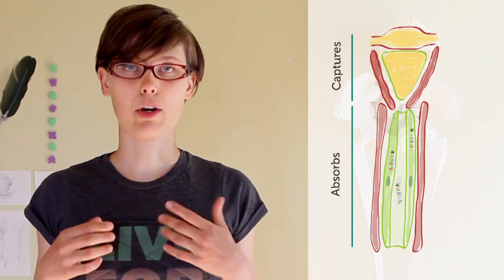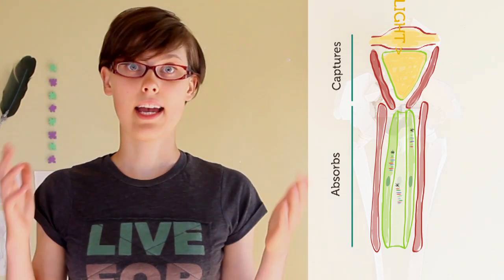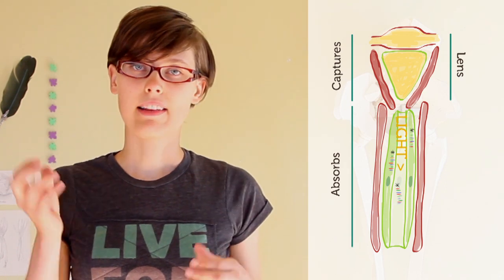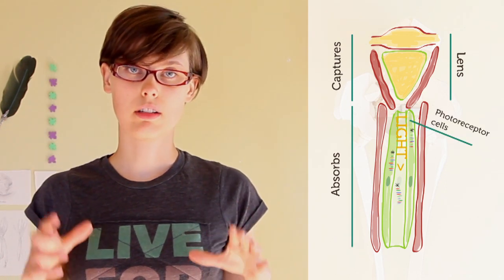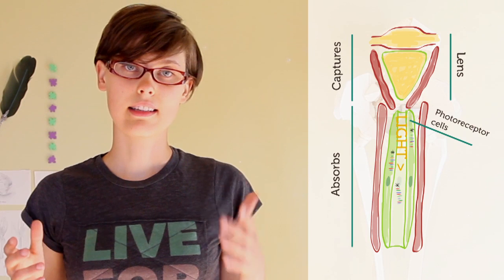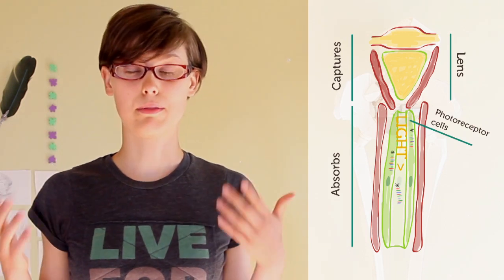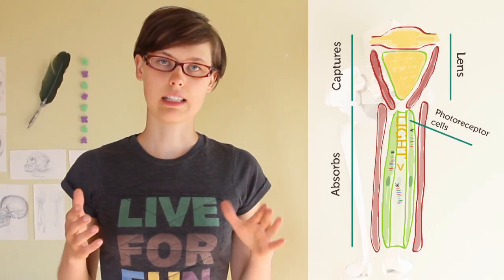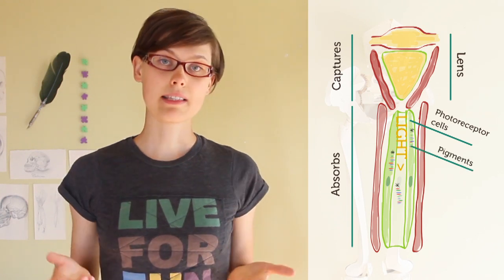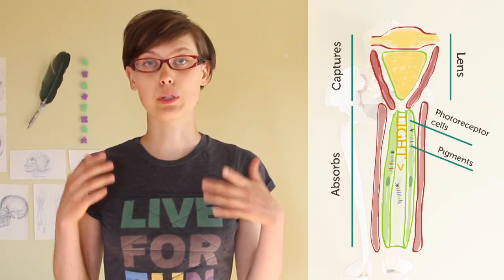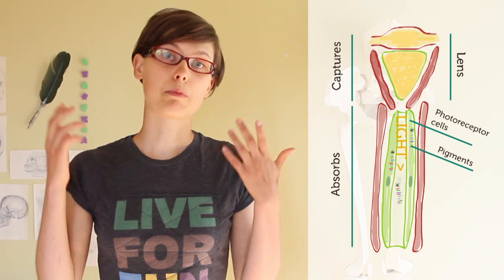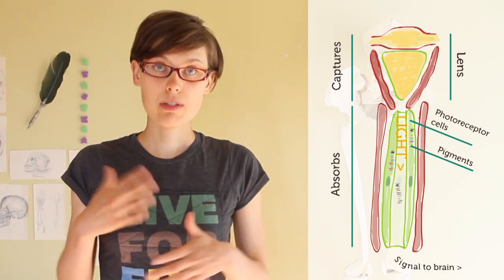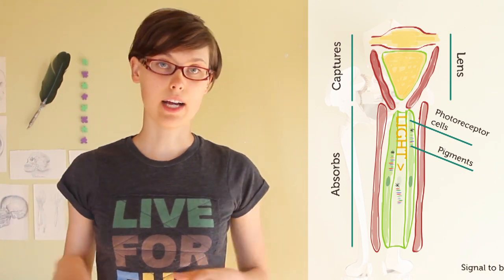When the light is reflected from an object, it enters the light-capturing part. And in that part there is a lens, and the lens then focuses the light onto the photoreceptor cells in the light-absorbing part of the ommatidium. In these photoreceptor cells, there are many different pigments that can absorb light of different wavelengths. When the pigment absorbs the light, a signal is sent to the brain of the fly, which processes the image and basically tells the fly what it sees.